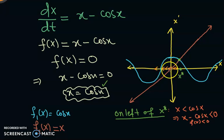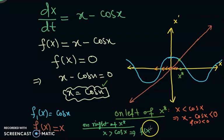Okay, so what is happening on the right side of x star? We can really see that on right of x star, x is greater than cos x. Therefore f of x must be greater than 0. In other words, the flow is towards right.